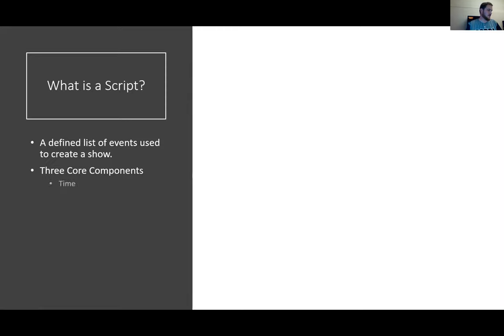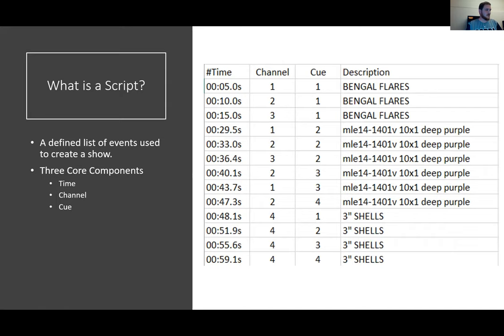A script is a defined list of events used to create a show. There are three main components: time, channel, and cue. For example, at five seconds we have channel 1, cue 1 firing; at ten seconds we have channel 2, cue 1 firing. There are a lot of other advanced components to a script that we're not really going to talk about today. We do plan to do an in-depth scripting seminar at a later time.